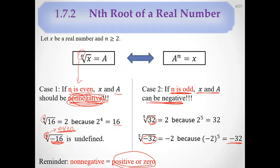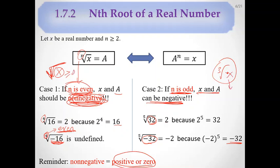If n is odd, x and a can be anything — negative or positive. The fifth root of 32 is 2 because 2⁵ = 32, and the fifth root of −32 is −2 because (−2)⁵ = −32. For even indices, just like the square root, only non-negative values are accepted.